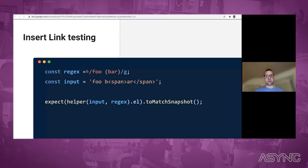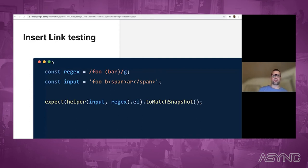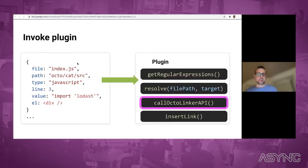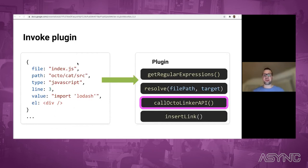Again, we're using snapshots to ensure this is correct. There's a helper function that helps you construct the test where you only have to provide an HTML string and a regular expression. Then at the end, we get the link inserted into the DOM. The one remaining piece is that if a module is actually an external dependency, like a package from npm, then we need to reach out to the Octolinker API.